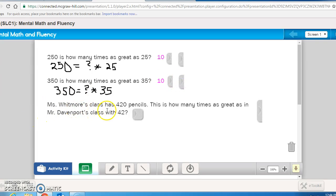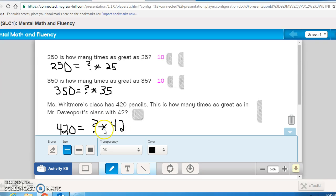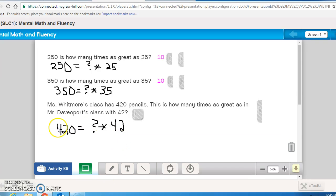Mrs. Whitmore's class has 420 pencils. This is how many times as great as in Mr. Davenport's class with 42? So if I wrote that as an unknown, I would write 420 pencils is how many times as many as great as 42? So what is 42 times what is equal to 420? Hopefully you're seeing the pattern and know that it is 10.